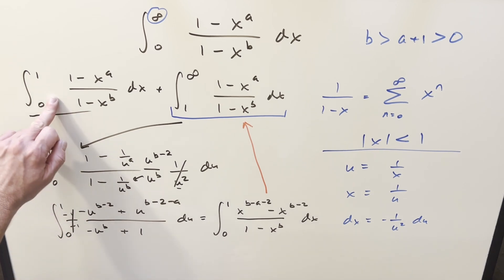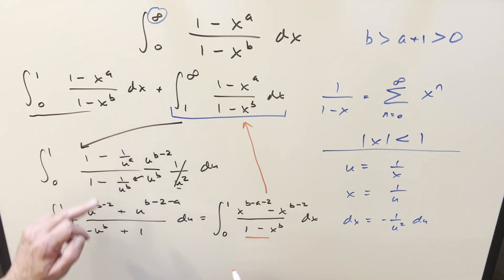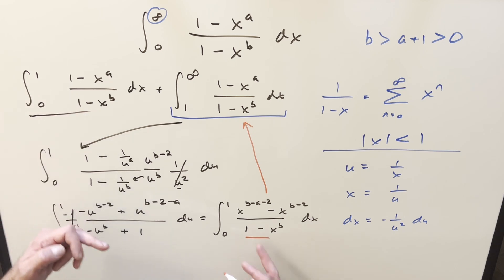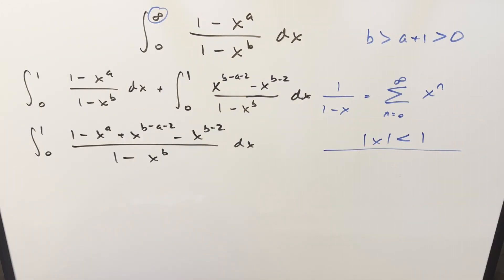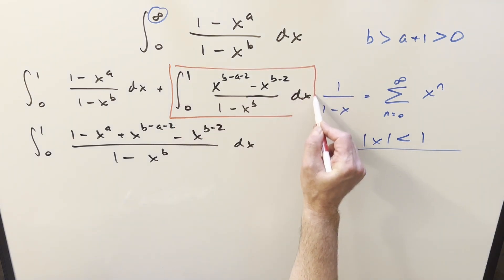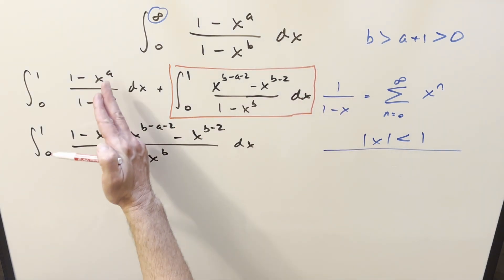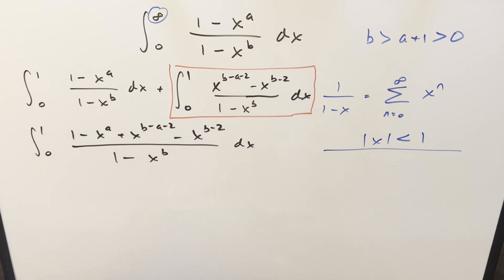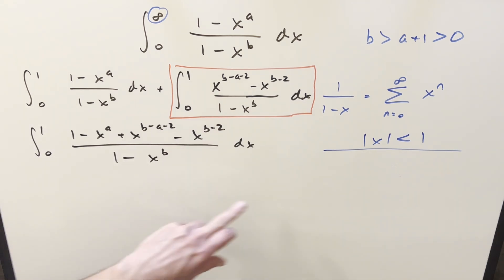Now we put this back with the original integral over [0,1]. Since both integrals share the same bounds and the same denominator (1 minus x to the b), we can just add the numerators together. With this combined integral going from 0 to 1 and (1 minus x to the b) in the denominator, we can now apply the geometric series formula.